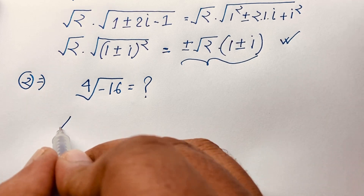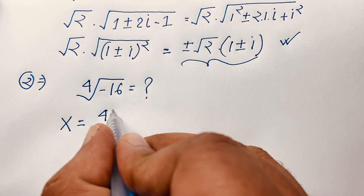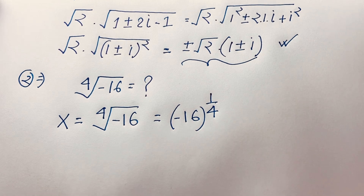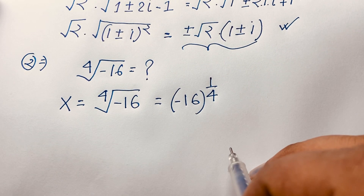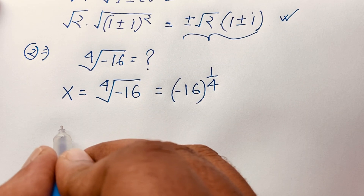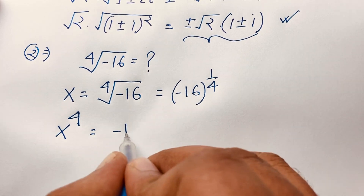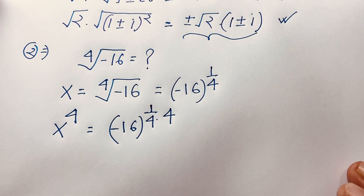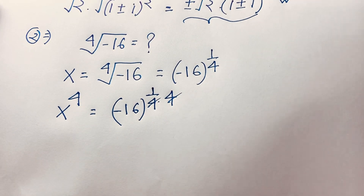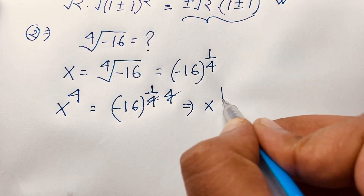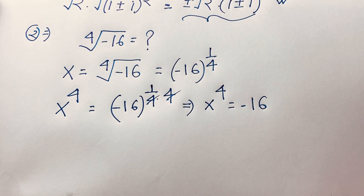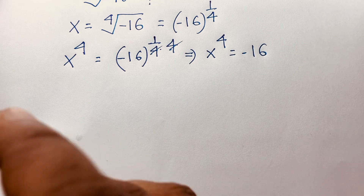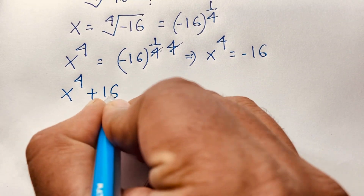Method 2: Our question is the 4th root of -16. Let x = ⁴√(-16), which equivalently means x = (-16)^(1/4). Raising both sides to the power 4: x⁴ = (-16)^(1/4 × 4), so the 4s cancel and we get x⁴ = -16, or x⁴ + 16 = 0.